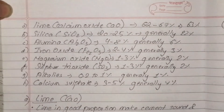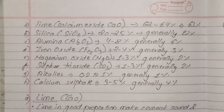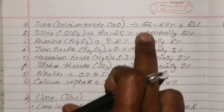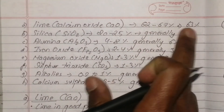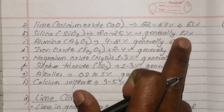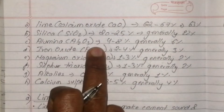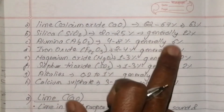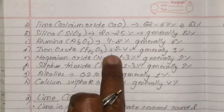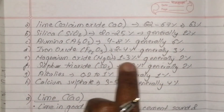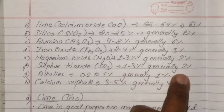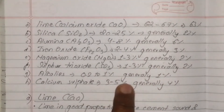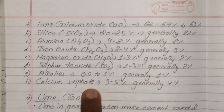The components by percentage range include lime, aluminum oxide, iron oxide, sulfur trioxide, and alkaline calcium.